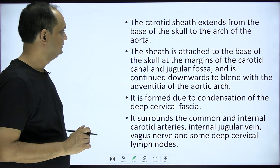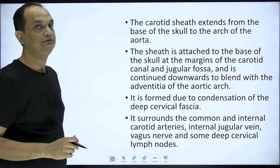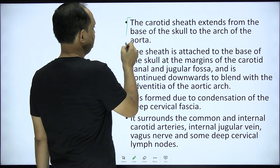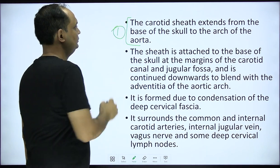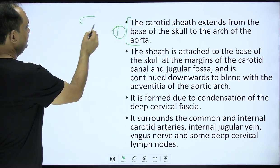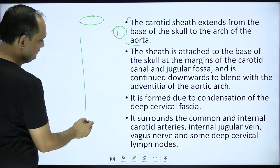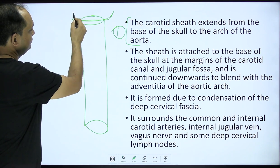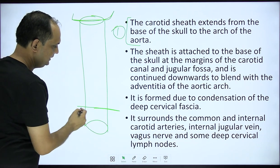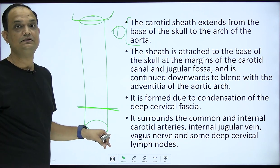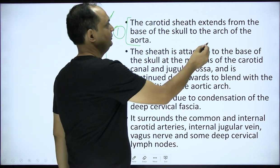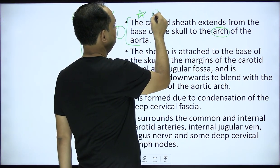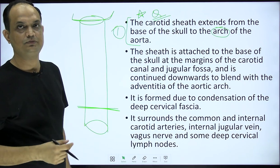The carotid sheath extends from the base of the skull to the arch of the aorta. This is a tube present on both sides of the pharynx, and it starts from the base of skull, crosses the superior mediastinum, and merges with the arch of the aorta. This is a very important exam question — the carotid sheath has an upper attachment and a lower attachment.